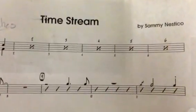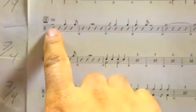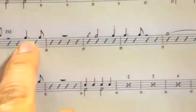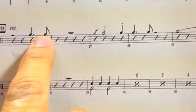All right, we're going to do the Nestico chart Time Stream and take a look at measure 25. We've got a dotted note and an eighth note, so we'll use the right, right, left, right.